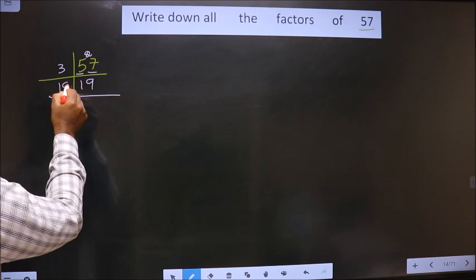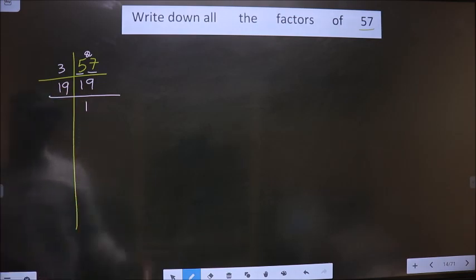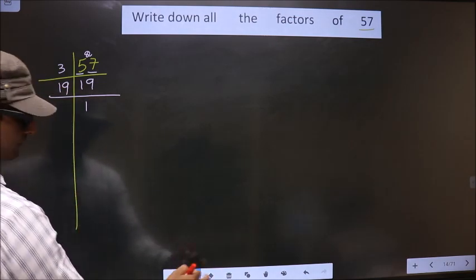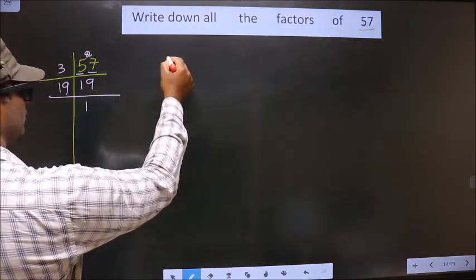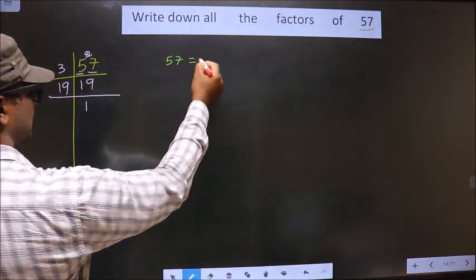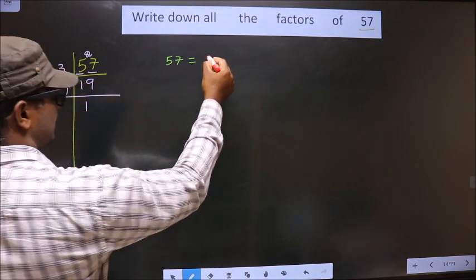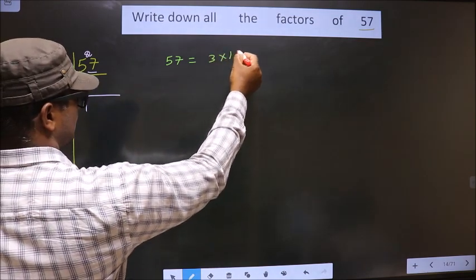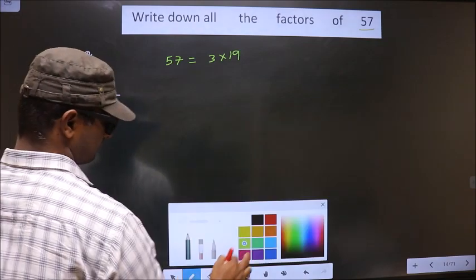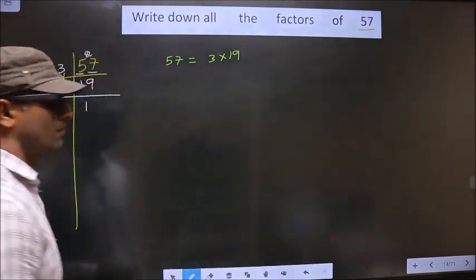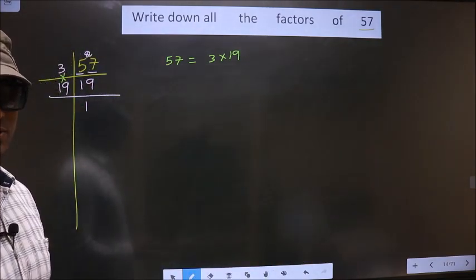Now, we got 19. 19 is a prime number, so we take 19 and 1. So now, 57 is nothing but the product of these numbers. That is 3 into 19. Am I clear so far?